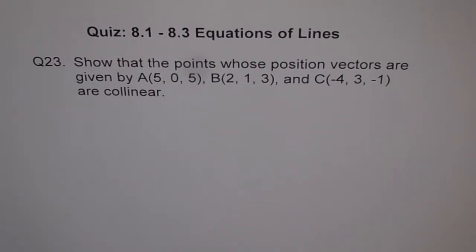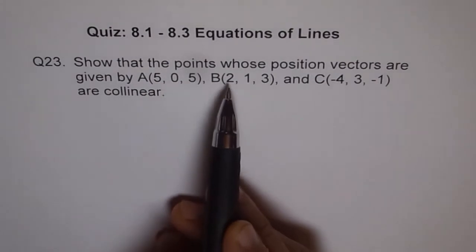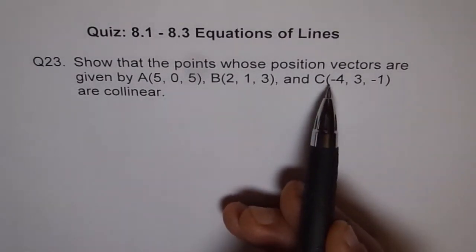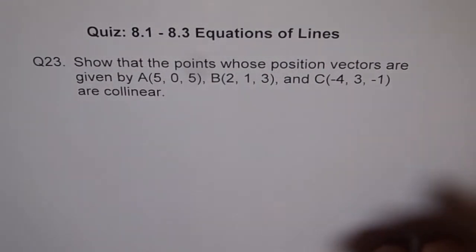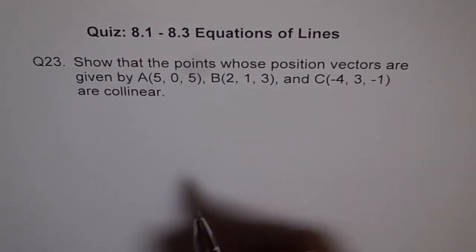Now, what we will do is we find a symmetric equation for A and B and then see if point C lies on it or not. If point C lies on AB, then they're collinear, otherwise they are not.